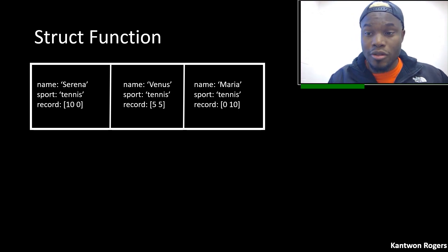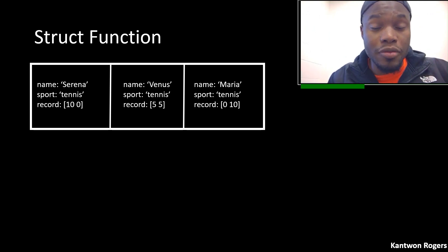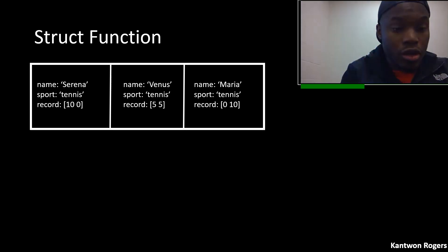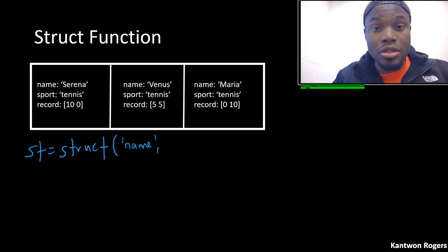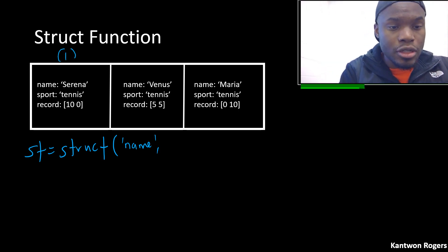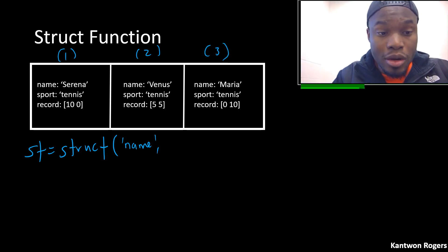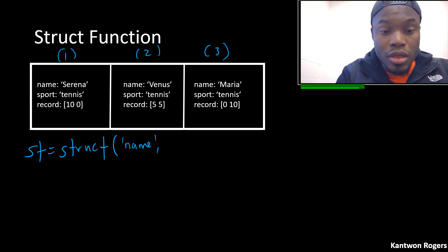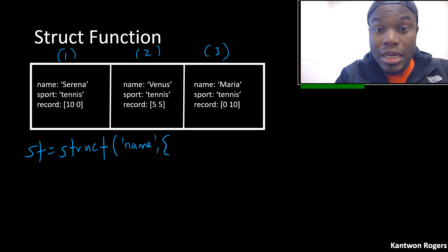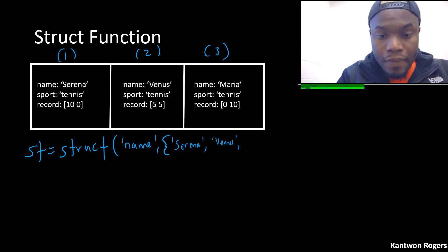If I wanted to create this using the struct function, it's similar to creating a one-by-one structure in the sense that the struct function takes in field name-value pairs. So I call this 'st' and use struct. The first field name is 'name', and now I have multiple names. In order to tell MATLAB you want to create a multi-dimensional structure array, you put your values inside of a cell array inside of curly brackets. The first one is Serena, the second is Venus, the third is Maria.